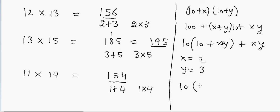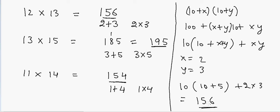So if x is equal to 2 and y is equal to 3, that gives us 10 into 10 plus 5, plus 2 into 3. That will give me 15 and then 6. So it will go to the 10th place. That's how this trick works.